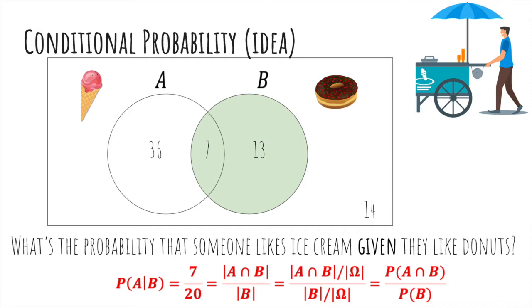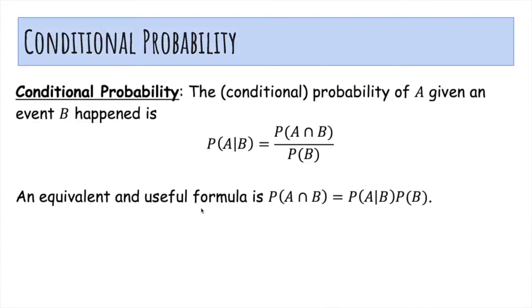This will be our definition of conditional probability, which we got from intuition. An equivalent formula that we'll use often is one where we move probability of B to the other side, so we have probability of A and B equals A given B times probability of B.